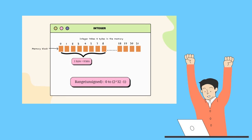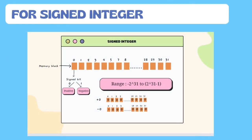For an integer using 32 bits, the range for positive values is 0 to 2 raised to the power 32 minus 1. Now let's look at the range when we include both negative and positive integers — that is, for signed integers. In the memory block, the leftmost bit (the MSB, most significant bit) is used to represent the sign: if it is 0 the number is positive, and if it is 1 the number is negative. In that case the range becomes minus 2 raised to the power 31 to 2 raised to the power 31 minus 1.